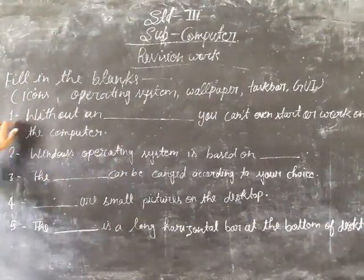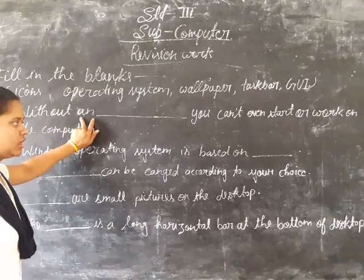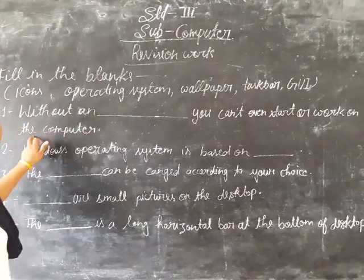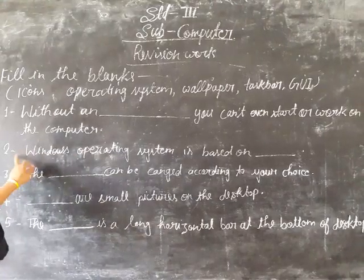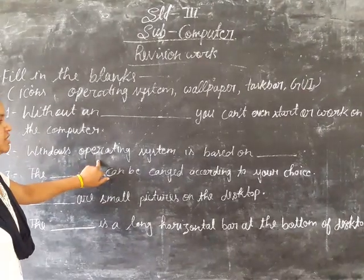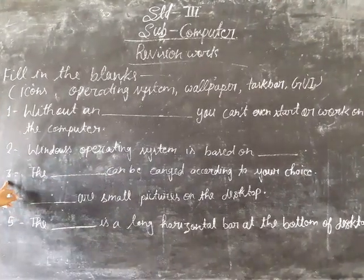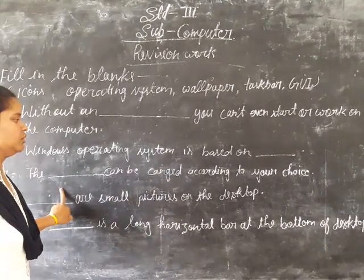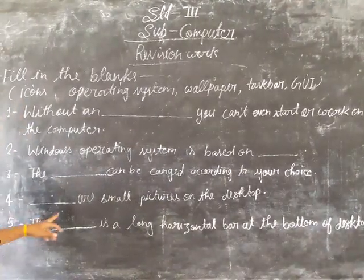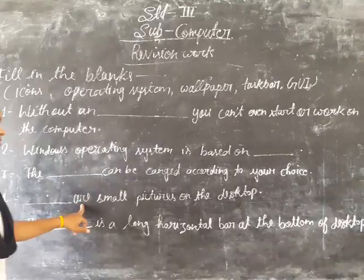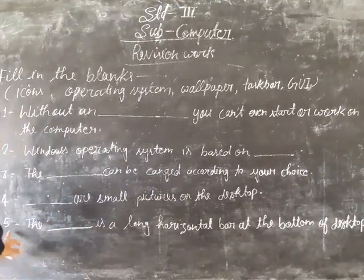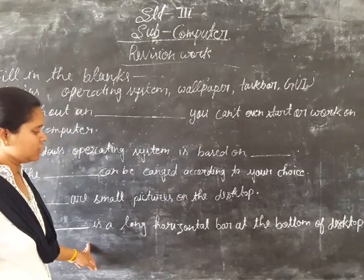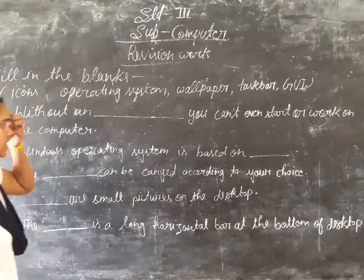So first, without a blank, you can't even start work on the computer. And second, Windows operating system is based on blank. Third, the blank can be changed according to your choice. And fourth, blank are smart features on the desktop. And fifth, the blank is a long horizontal bar at the bottom of the desktop.